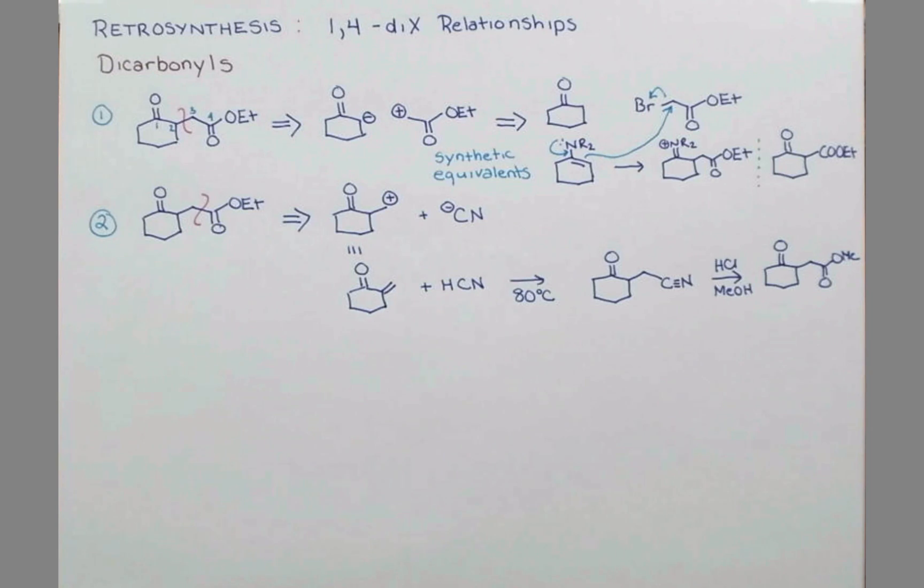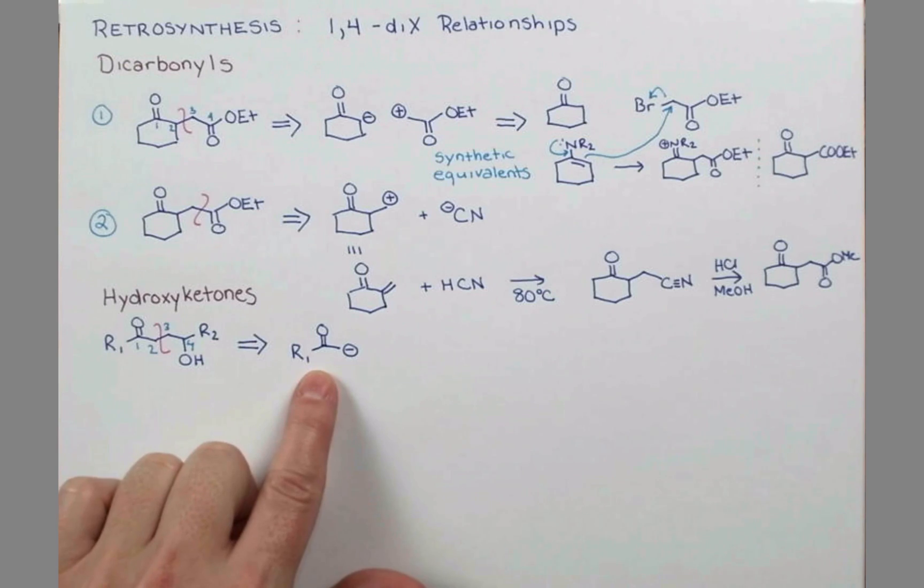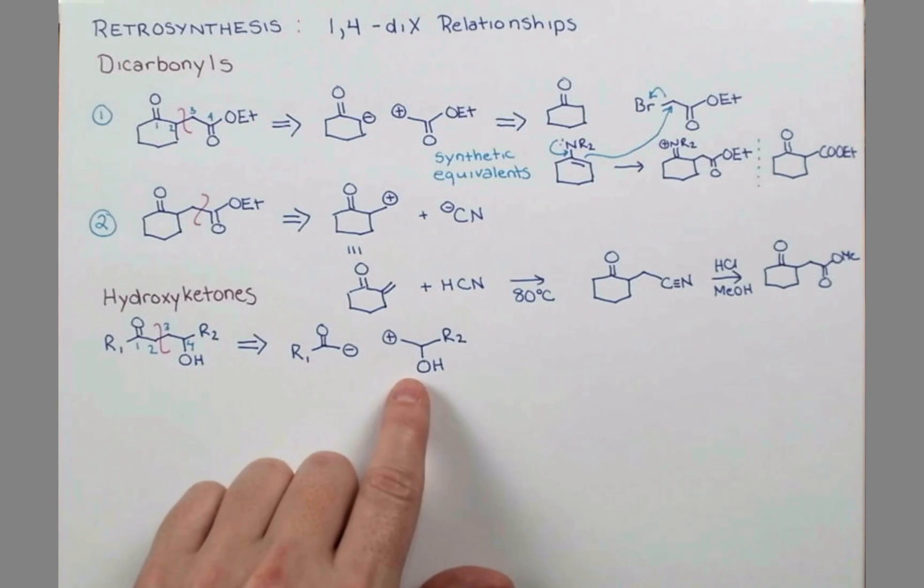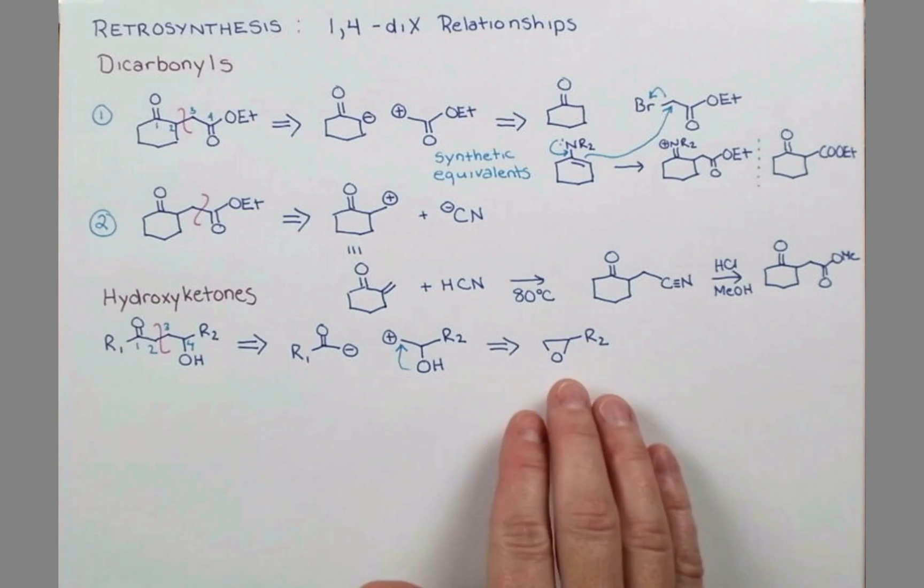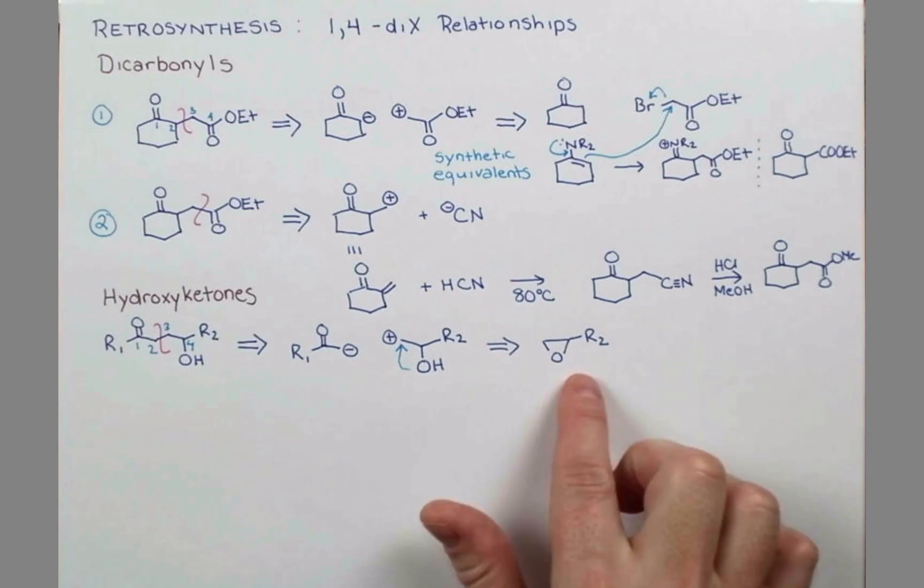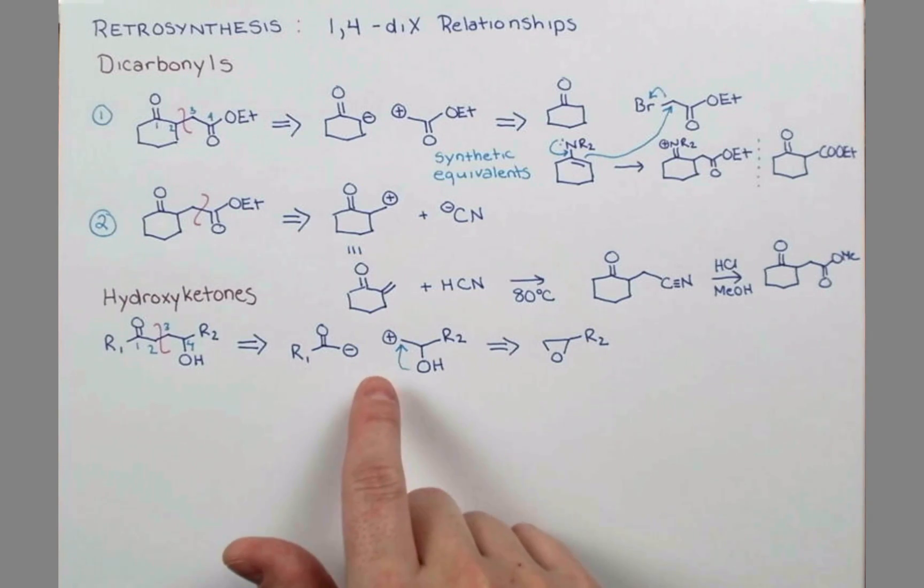Let's say our synthetic target is a hydroxy ketone, maybe something like this. We'll number our atoms to reveal our 1,4 relationship. Now we're going to cleave in such a way that we produce an enolate from this side, so again cleaving between carbon atoms 2 and 3. Here's our enolate and we're going to make a positive synthon from this other side. Oxygen has lone pairs. If we envision it using one of them to make a bond with this electrophilic site, we reveal an epoxide.